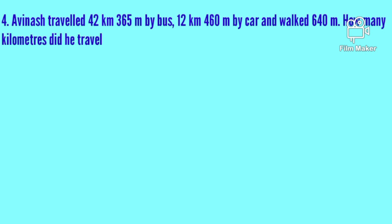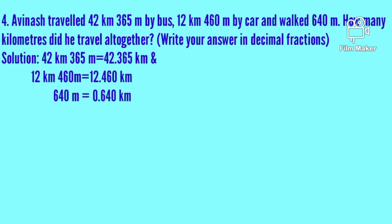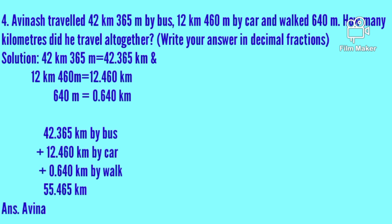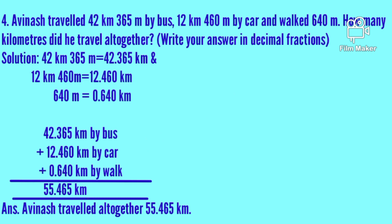Let us start the word problems. Avinash traveled 42 km 365 m by bus, 12 km 460 m by car, and walked 640 m. How many kilometers did he travel altogether? We convert all into kilometers and add: 42.365 plus 12.460 plus 0.640. The answer is 55.465 kilometers. So Avinash traveled 55.465 km altogether.